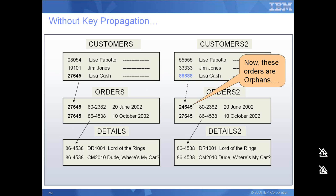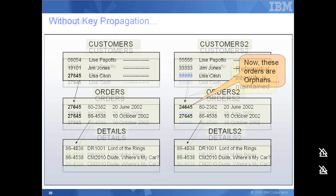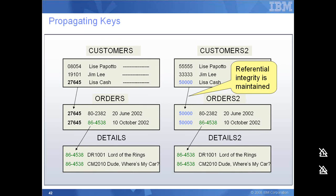Without key propagation: if we have the customer, orders, and details tables and I modify the customers table without modifying the orders and details tables, it would create orphan records, breaking the referential integrity between customers, orders, and the subsequent details. When doing key propagation as part of the data privacy implementation, I ensure that when modifying the parent table, the subsequent child tables are also modified. This maintains referential integrity and ensures that the application's QA test cases will not fail.